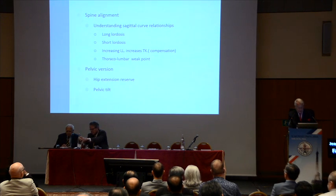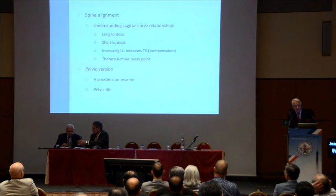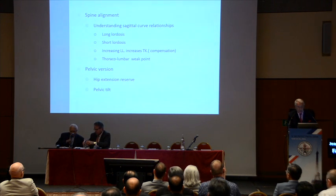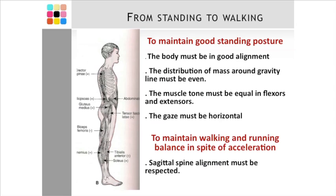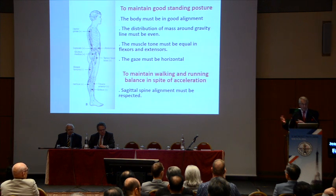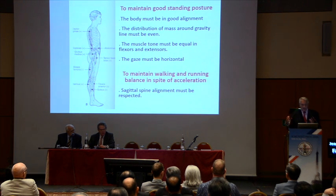Also, the pelvic version is giving us very nice information about the hip extension reserve. When we lose it, we lose the possibility to stand up in correct posture. But standing in correct posture means being able to walk freely with a large stride, and for that the body must be in good alignment. The distribution of mass around the gravity line must be even. The muscle tone — not muscle strength — the muscle tone must be equal in flexor and extensor. It's no point going to the gymnasium to pump iron and get fantastic muscles. That doesn't do the trick. The trick is to keep good muscle tone.